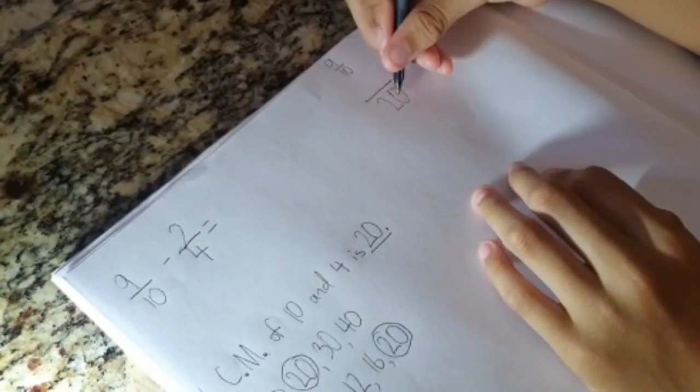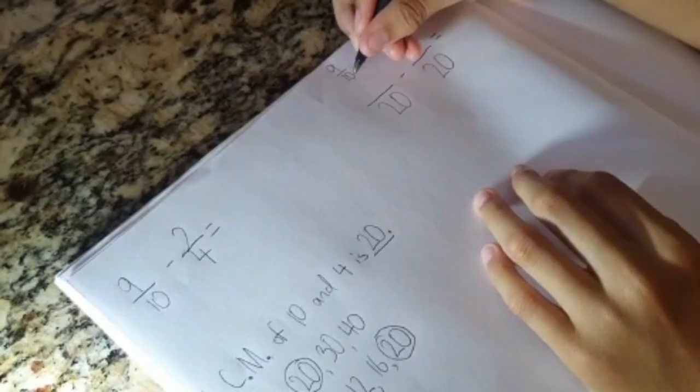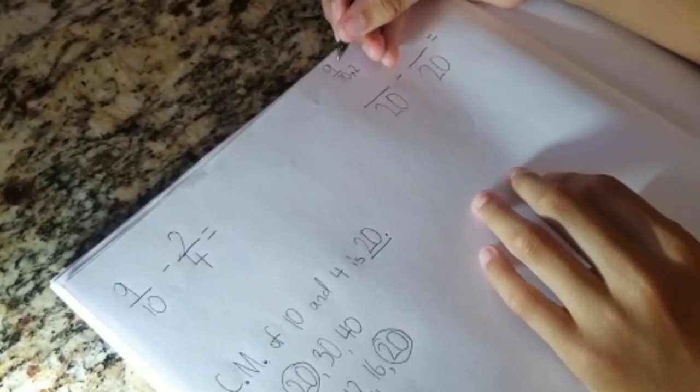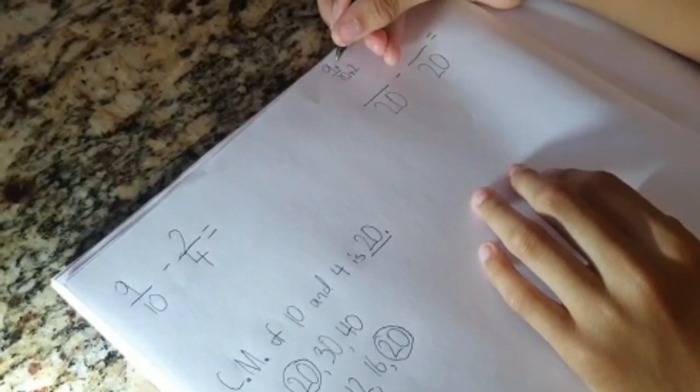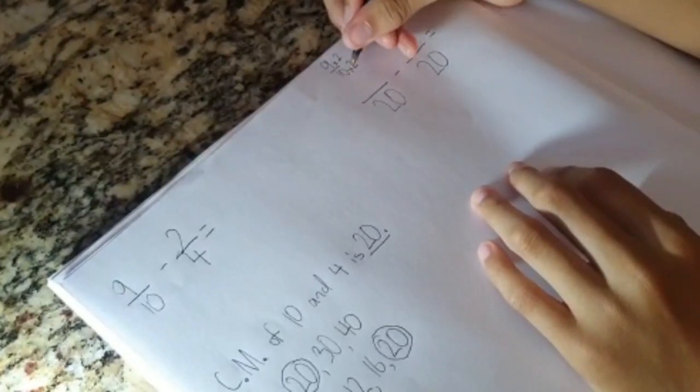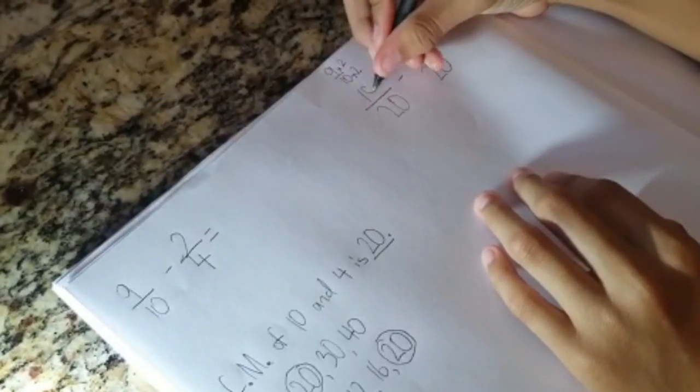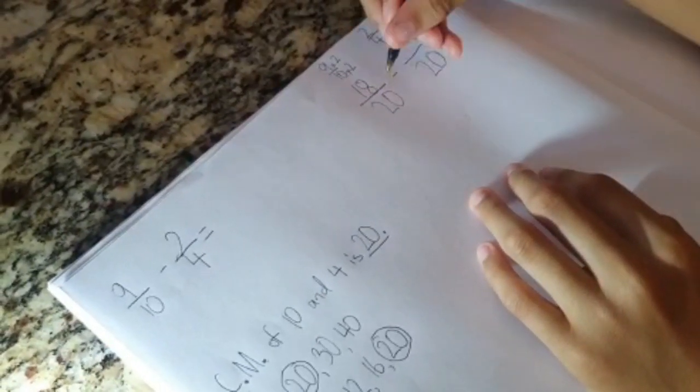10 times what will give you 20? It's 2, right? So, I'm going to put times 2 here. And whatever you do to the bottom, you must do to the top. So, since 10 tools are 20, then 9 tools will give you 18. 18 over 20 minus.